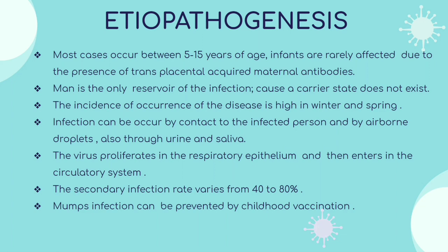The virus proliferates in the respiratory epithelium and then enters the circulatory system. The secondary infection rate varies from 14 to 80%. Mumps infections can be prevented by childhood vaccinations.